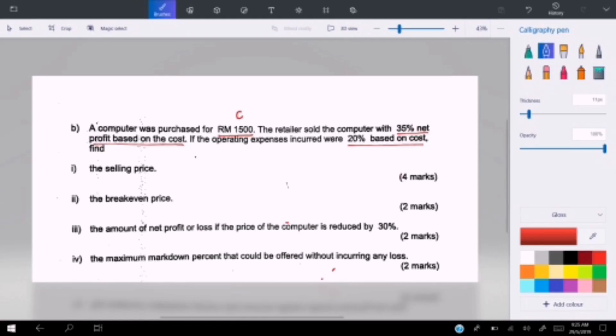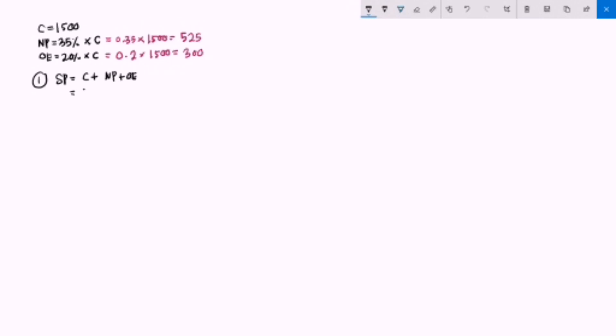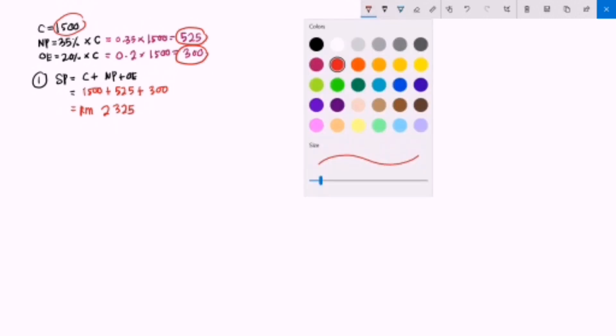Operating expenses equals 0.20 times 1500, giving RM 300. The first question asks us to find the selling price: SP equals cost plus net profit plus OE, so 1500 plus 525 plus 300, giving RM 2325. That is the selling price for the computer.